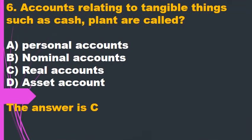Question 6. Accounts relating to tangible things such as cash and plant are called: A. Personal accounts. B. Nominal accounts. C. Real accounts. D. Asset account. The answer is C.